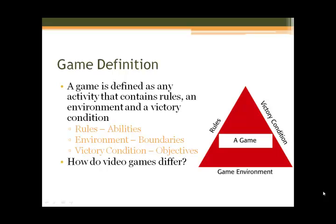The question is: how do video games differ? Looking at what we have, you must have a graphical display and a user interface. In the game of football it was a physical game; however, to make football digital, you must have a monitor on which you can see the game and the environment, and a user interface that helps control the avatar to use abilities and achieve objectives.